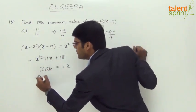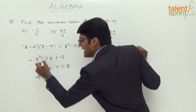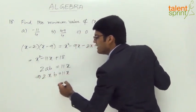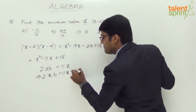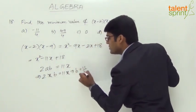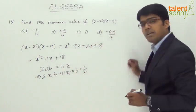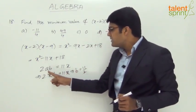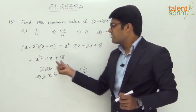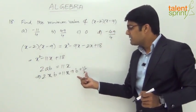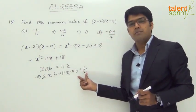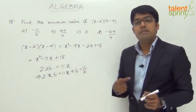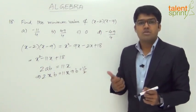Substituting, 2 into x into b equals 11x. The x gets cancelled, giving us b equals 11 by 2. So if we take 2 into x into 11 by 2, we get 11x. This means b equals 11 by 2, and therefore b squared equals (11 by 2) whole square.